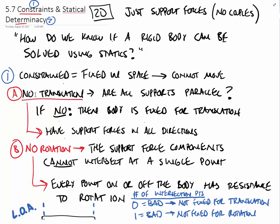First we'll look at no translation. The question we can ask to determine if there's translation or not is: are all supports parallel? In Constraints and Statical Determinacy, we're primarily looking at support force components. If all of them are parallel, the body could be pushed perpendicular to those supports, and hence it would not be fixed for translation. If the support force components are going in all directions, then there would be no direction we could push the body for translation.